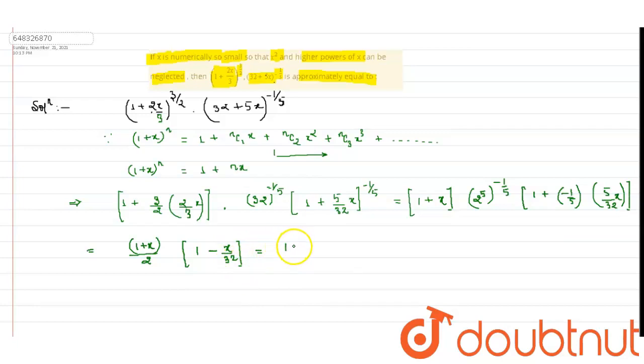On further simplification we get 1 plus x by 2. Here 5 and 5 will cancel out and we are left with 2 to the power minus 1 which is 1 by 2, multiplied with 1. This 5 and 5 will cancel out and we are getting 1 minus x by 32. On simplification we get 1 plus x, 32 minus x divided by 64.